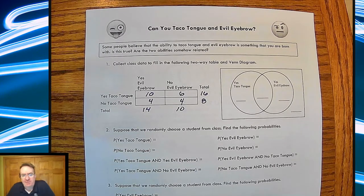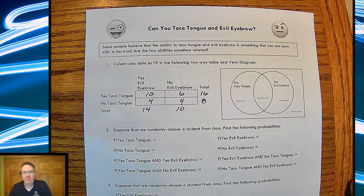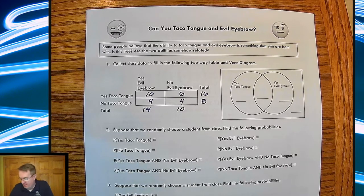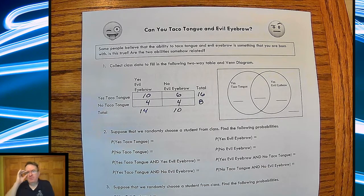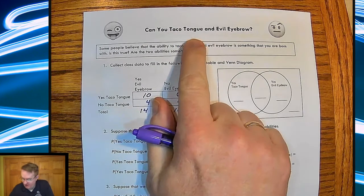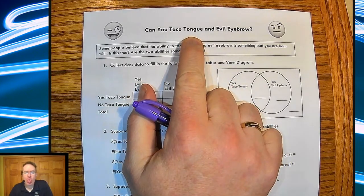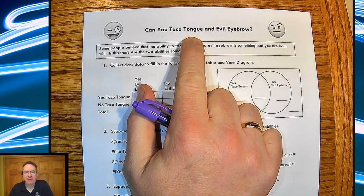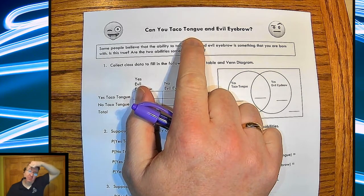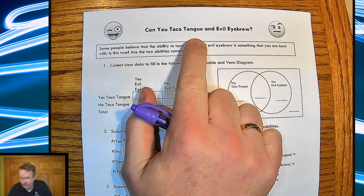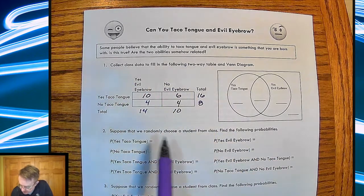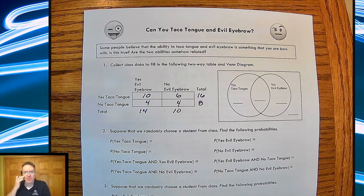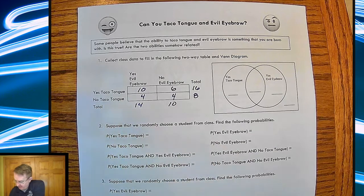Hey there gamers, or should I say SAS kids, time to talk about stupid human tricks. We're going through the stats medic curriculum. We are on, I believe this is day four. So we're talking about, normally what we'd end up doing is we collect some data today about can you do taco tongue, which is roll your tongue, or can you do the evil eyebrow where you raise one eyebrow? Just think Dwayne the Rock Johnson and you probably got it. So anyway, last year I did a quick poll on this with my kids and this was the breakdown of what we ended up getting.